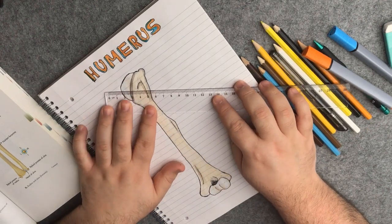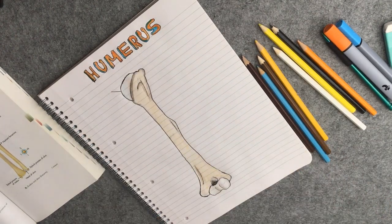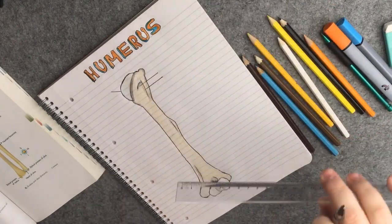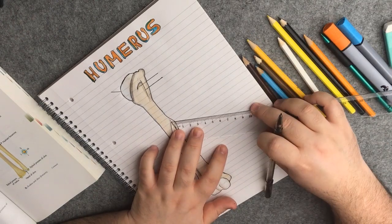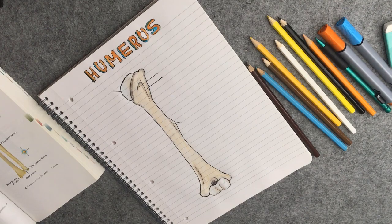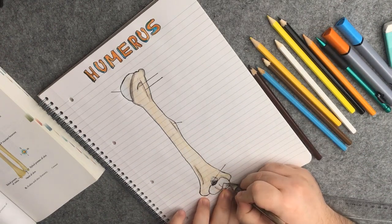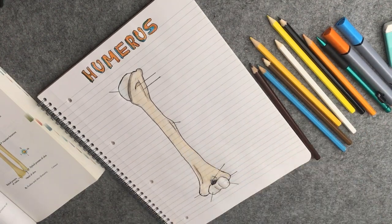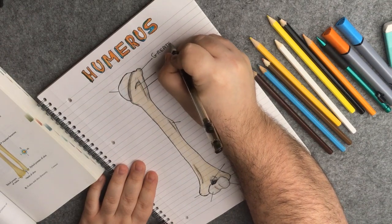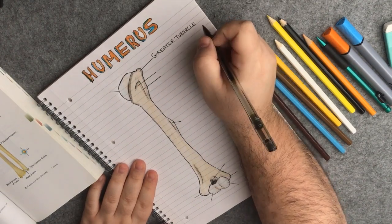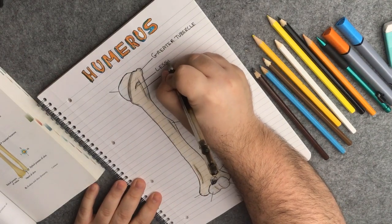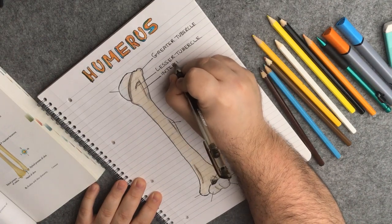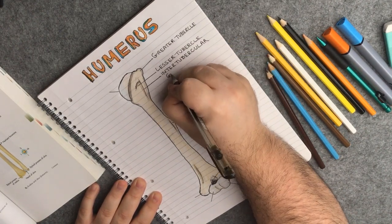It is time to label people. To make things easy, I first add the lines where I want the labels to be using my stick gel. First, I add the tuberosities, the greater and the lesser tuberosities. Remember, the greater tuberosity is where some rotator cuff muscles attach to. Then the intertubercular groove, which separates the lesser and greater tuberosities.